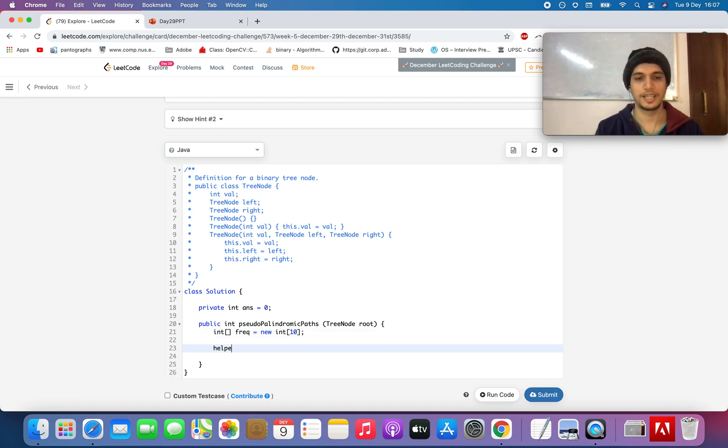Let's just define the helper method - it will have two variables in it: one is the root, another one is the frequency, and you'll simply return the answer there. Standard way of writing any traversal in a tree.